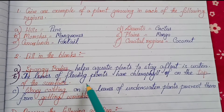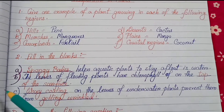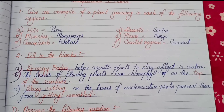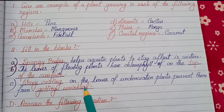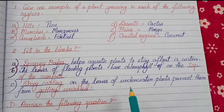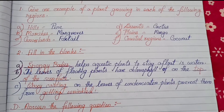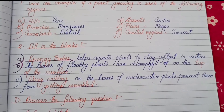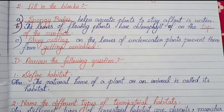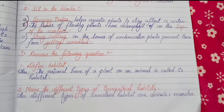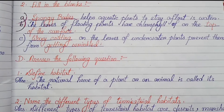Number two: fill in the blanks. A: spongy bodies help aquatic plants to stay afloat in water. B: the leaves of floating plants have chlorophyll on the top surface. C: waxy coating on the leaves of underwater plants prevents them from getting wrinkled.